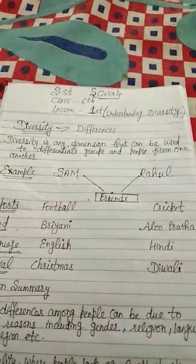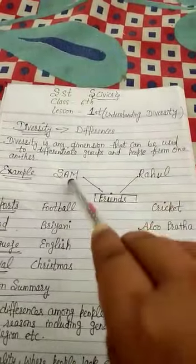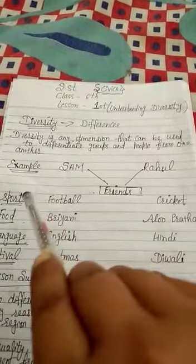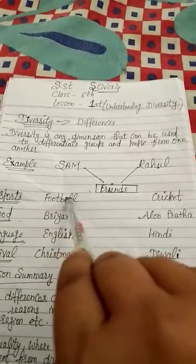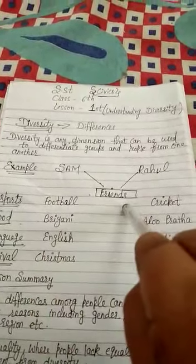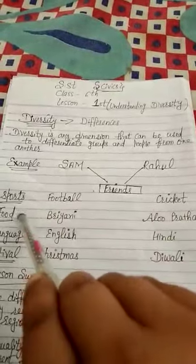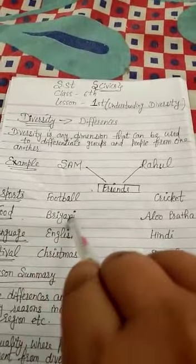I teach you through an example. Let's see. Sam and Rahul are two friends. Sam likes to play football. Rahul likes to play cricket. Sam likes to eat biryani.